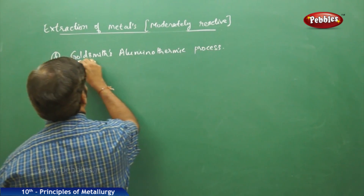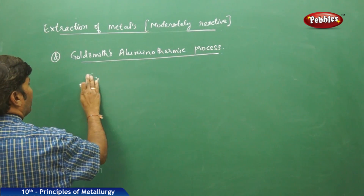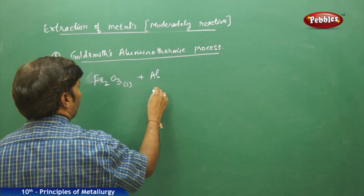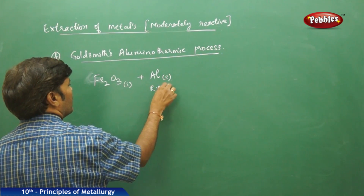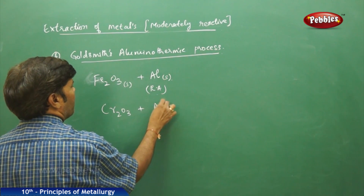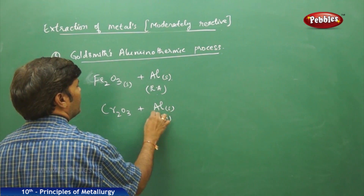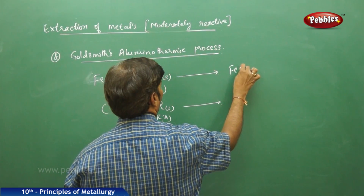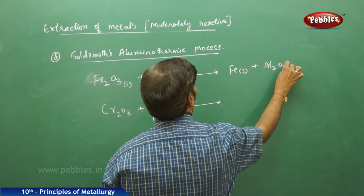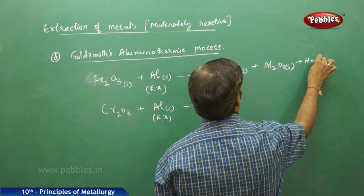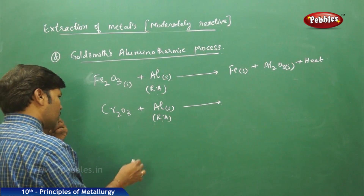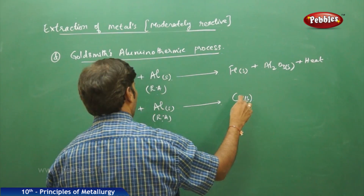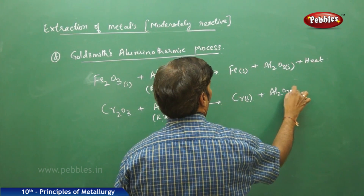In Goldschmidt's aluminothermic process, take Fe2O3 solid and treat it with aluminium solid acting as a reducing agent. Similarly, chromic oxide (Cr2O3) plus aluminium solid as reducing agent. In both cases, aluminium reduces the oxide of iron to molten iron, giving Al2O3 solid plus a large amount of heat. Aluminium also reduces chromic oxide to chromium solid plus Al2O3 solid plus heat.